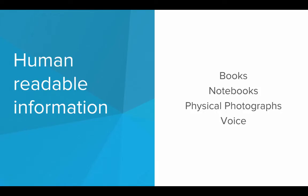Human readable information are things that humans can read but computers aren't really good at reading. Things like books, notebooks, physical photographs, and voice. These are information that's useful to humans but computers can't really understand it.